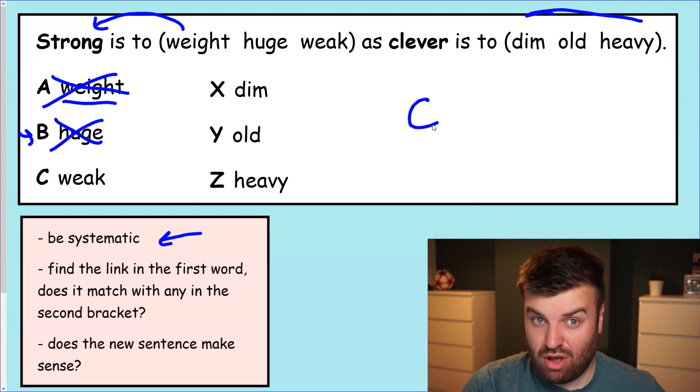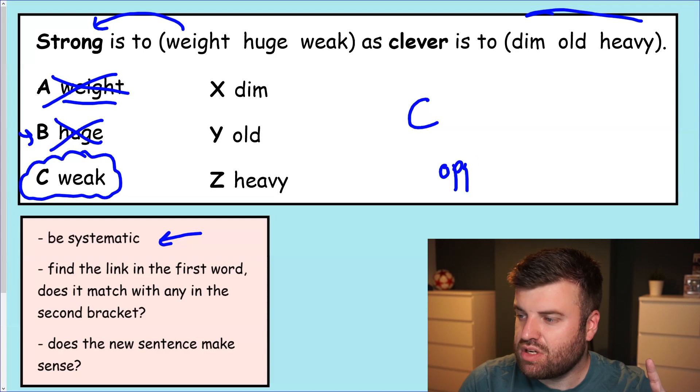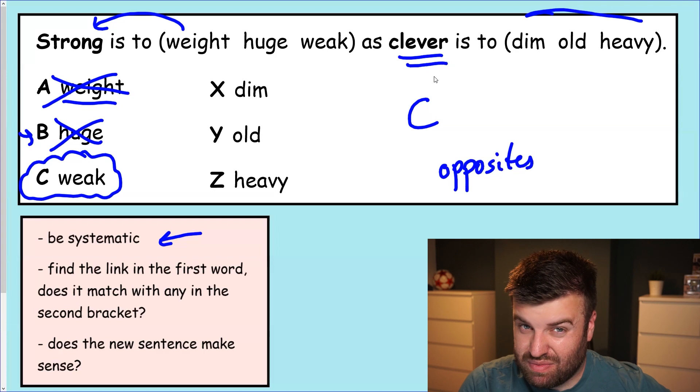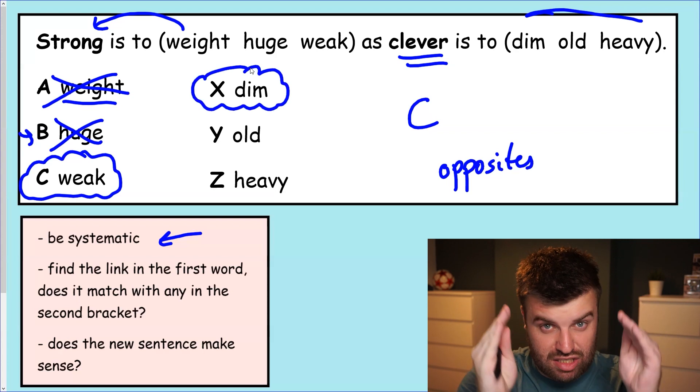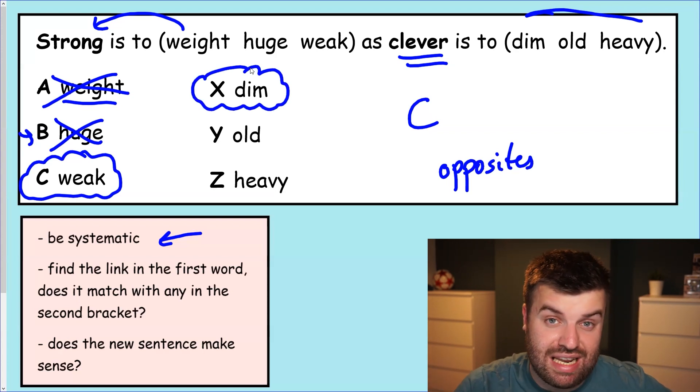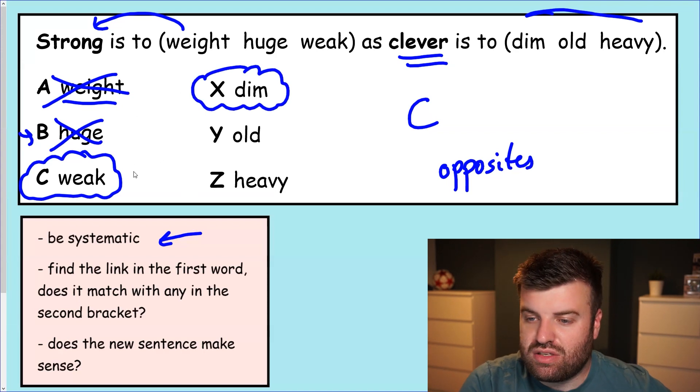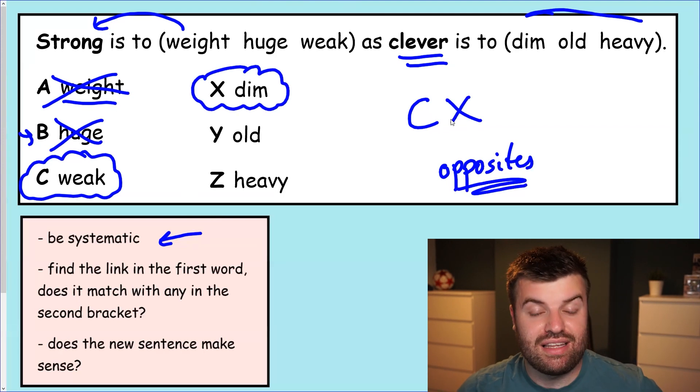So actually we know, and we're hoping anyway, fingers crossed that C is going to be the answer. Strong is to weak. Well hopefully you can see straight away they're opposites. So if we are going to find an answer that's correct here we need to find a word that's opposite to clever. Can you see it yet? Yeah, it's dim. Now dim is a trick here because it's a homophone. There are two different meanings for dim. Could be to do with light. It's very dark if it's dim. But also dim is another way of saying someone who is potentially less clever. So we call them dim. So strong is to weak as clever is to dim. They are opposites and the answer for this question is C and X.